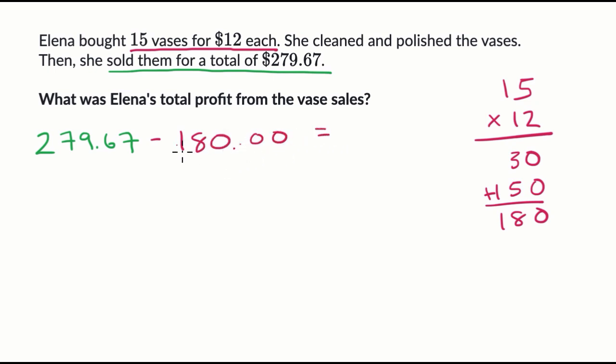And so this is going to be equal to, some of you, I'll do it both ways. Well actually it gets a little complicated, so I'll just do the subtraction. So we're going to have 279 dollars and 67 cents minus 180 dollars. That's going to give us our total profit.